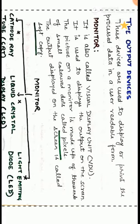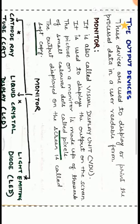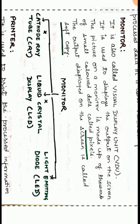An important term related to monitors is pixel, which means picture element. When thousands of small color dots or pixels are collected together, that forms a picture. So the smallest element of any picture is a pixel. Different types of monitors include Cathode Ray Tube (CRT), Liquid Crystal Display (LCD), and Light Emitting Diode (LED). These are the different types of monitors used in computer systems.